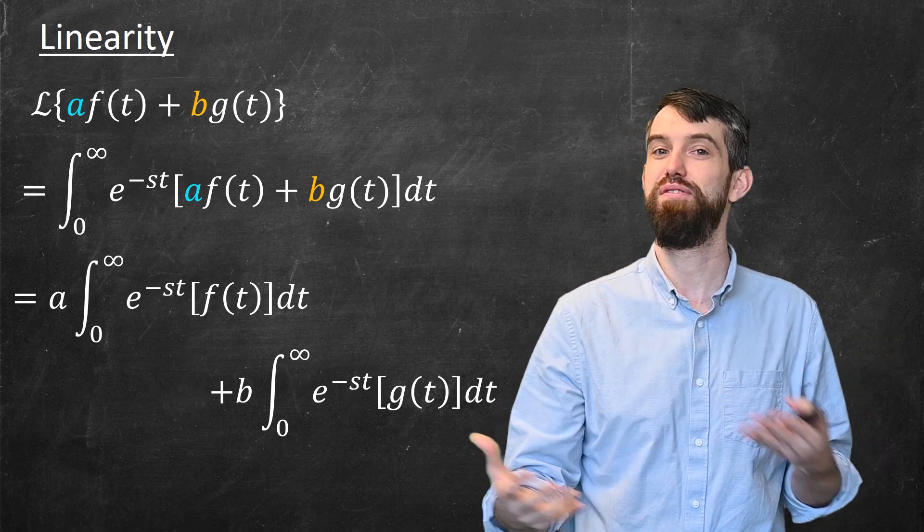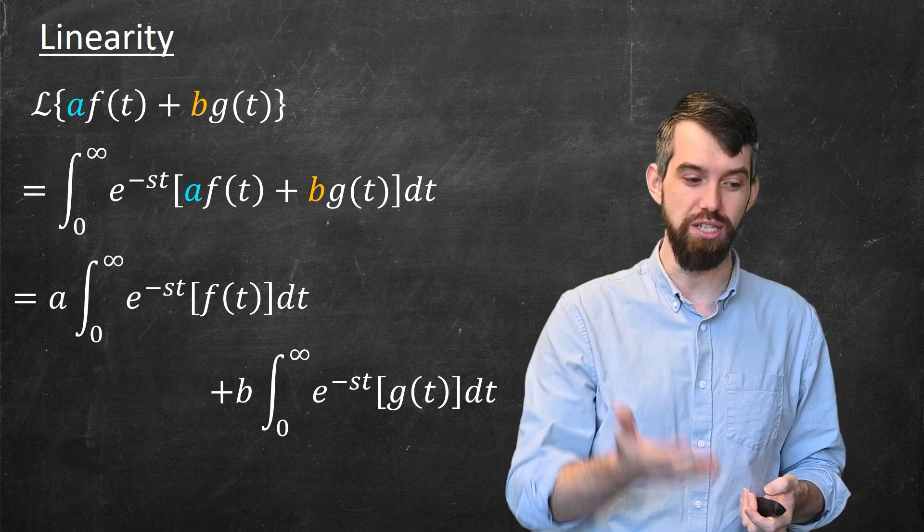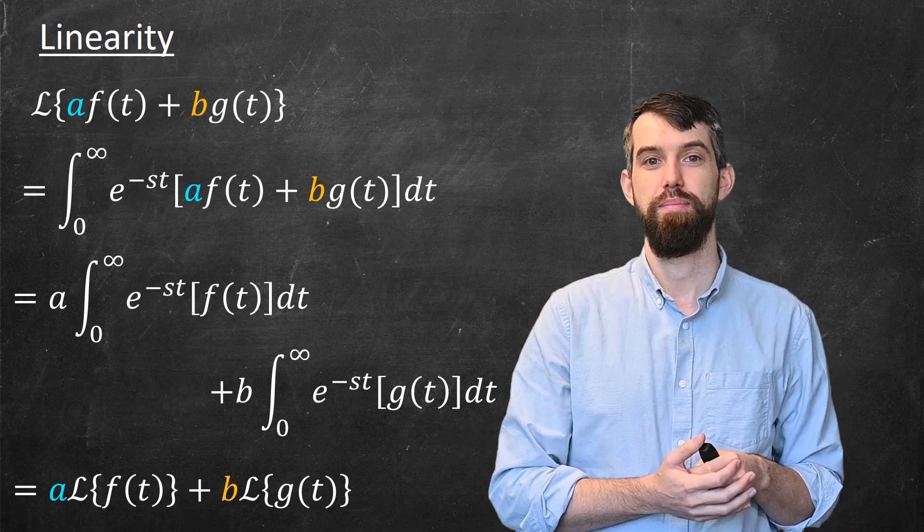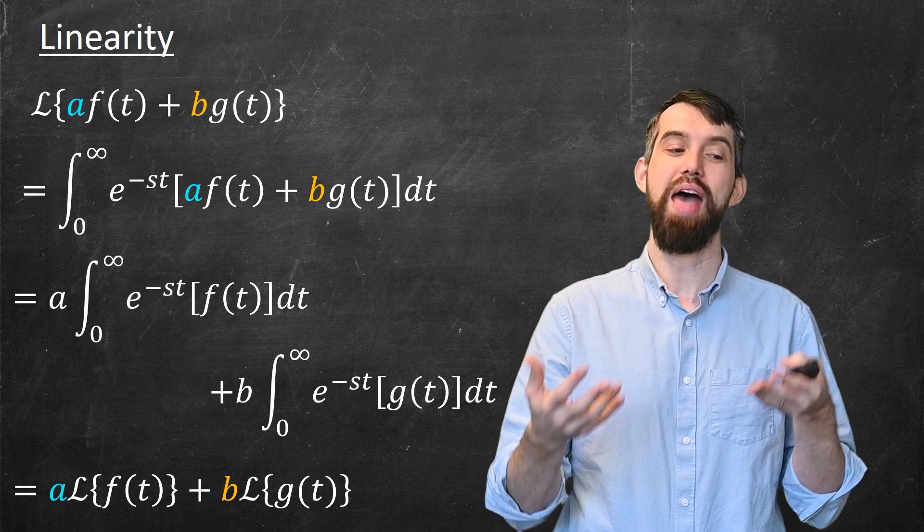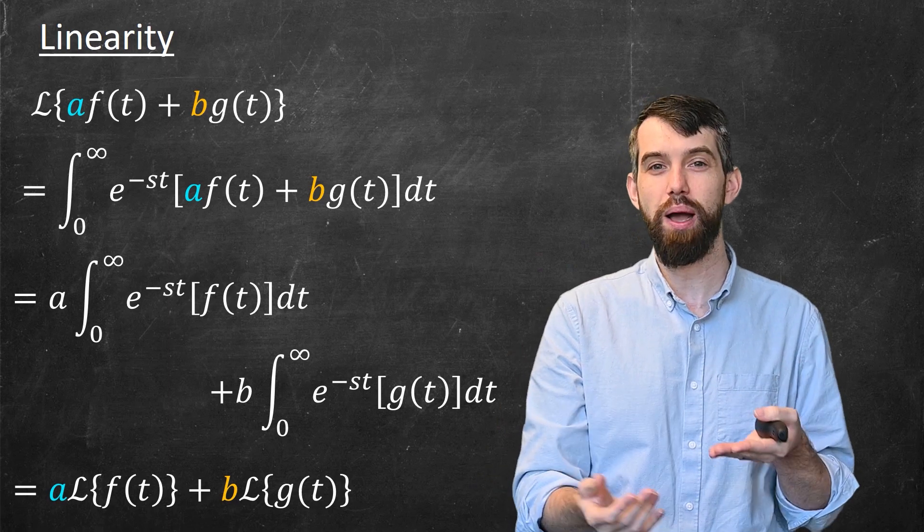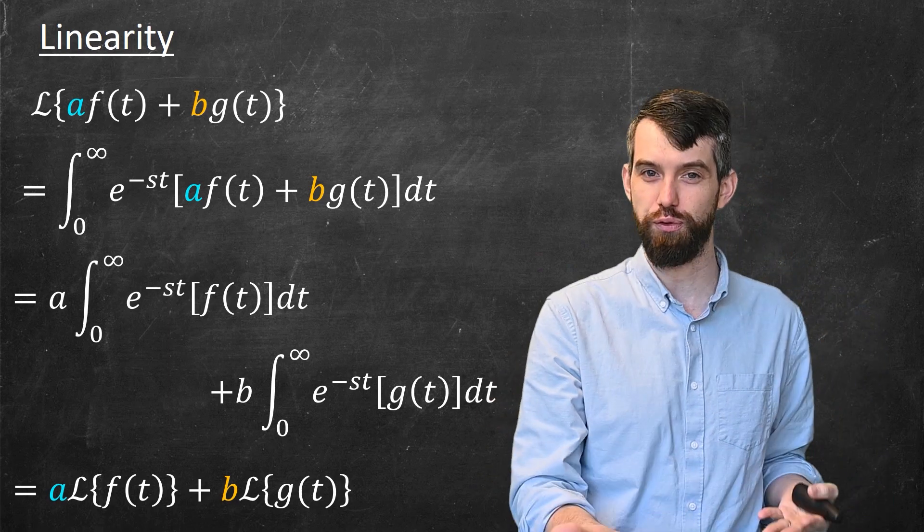Then by the definition of the Laplace transform, this is just a times the Laplace transform of f, plus b times the Laplace transform of g. Therefore we have our linearity property: the Laplace transform of a linear combination is the linear combination of Laplace transforms.